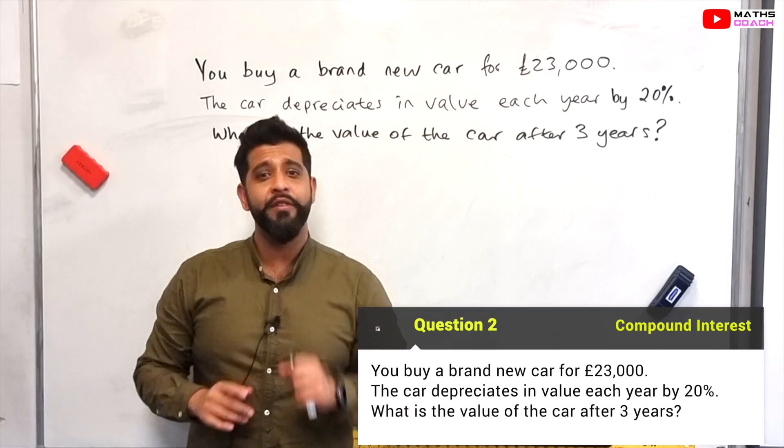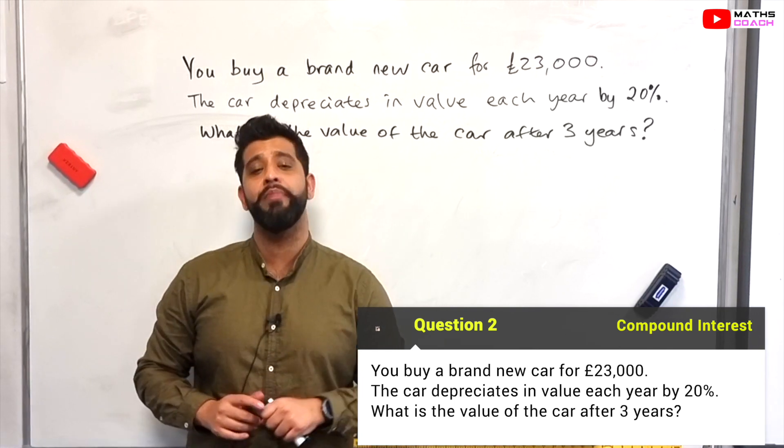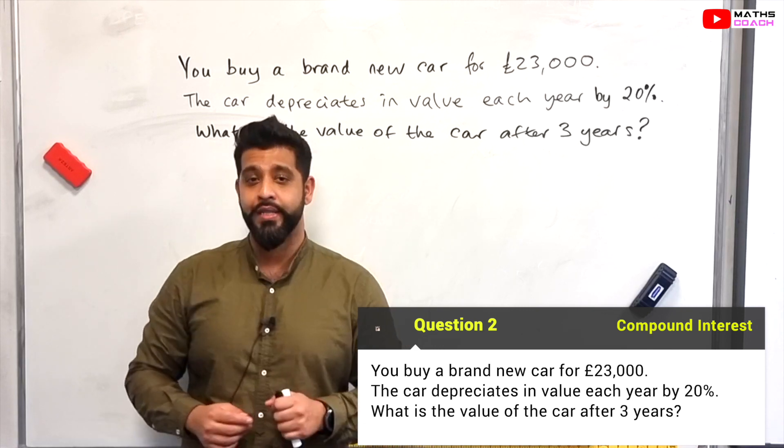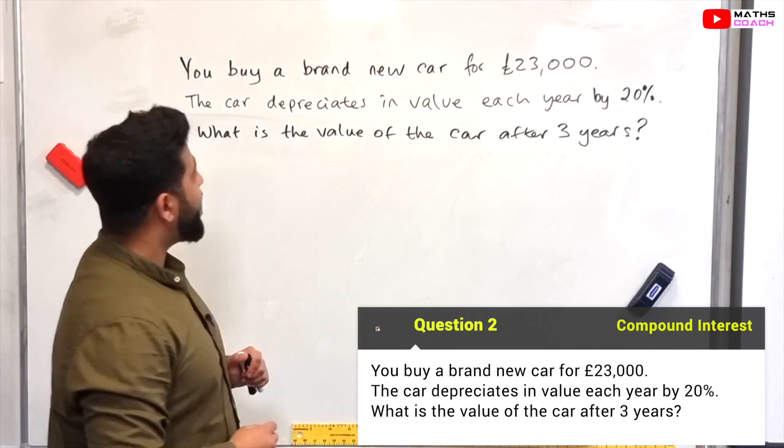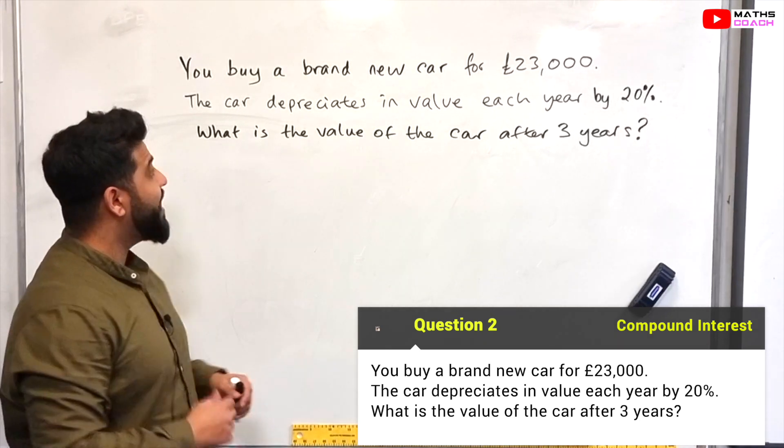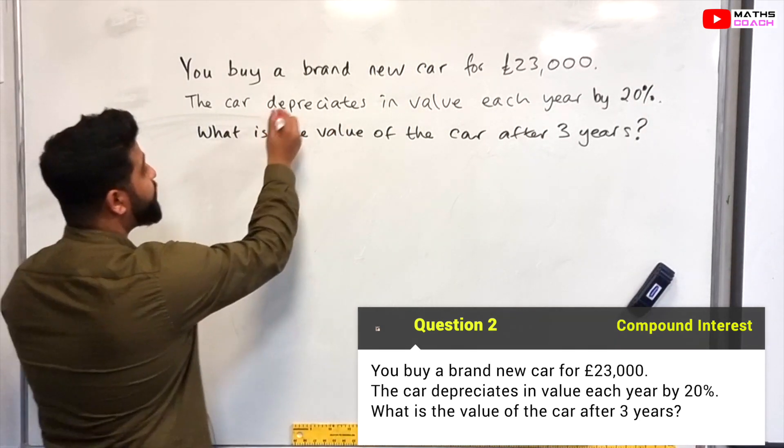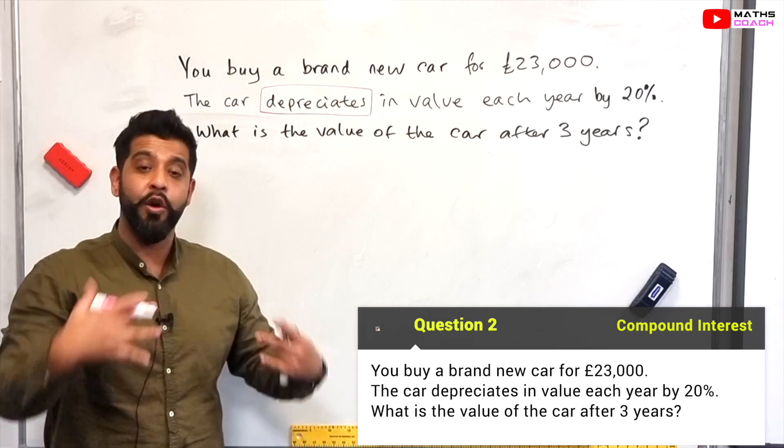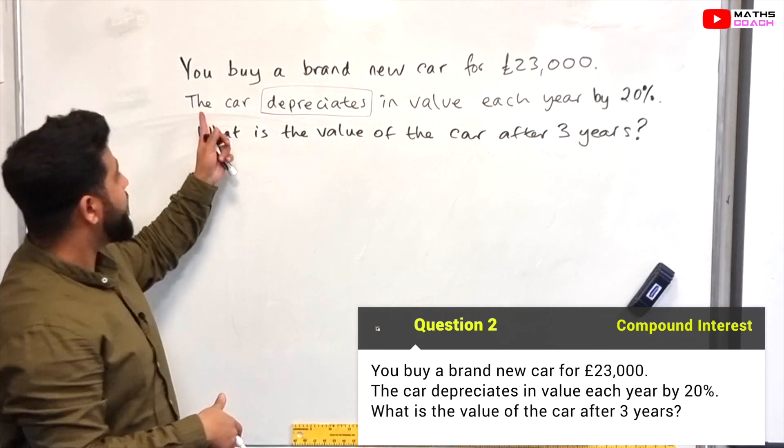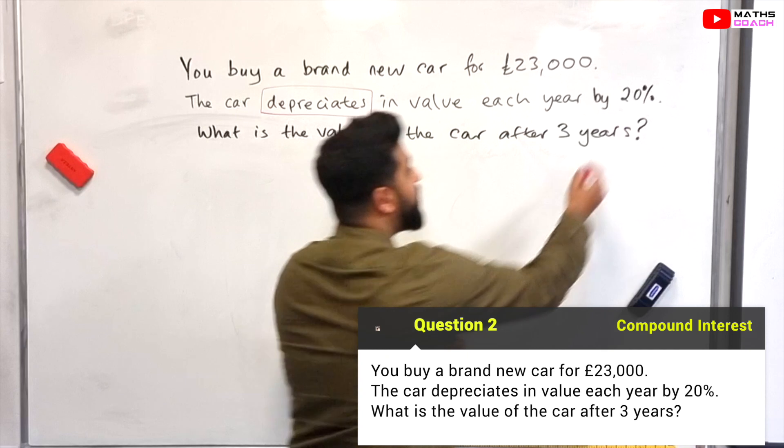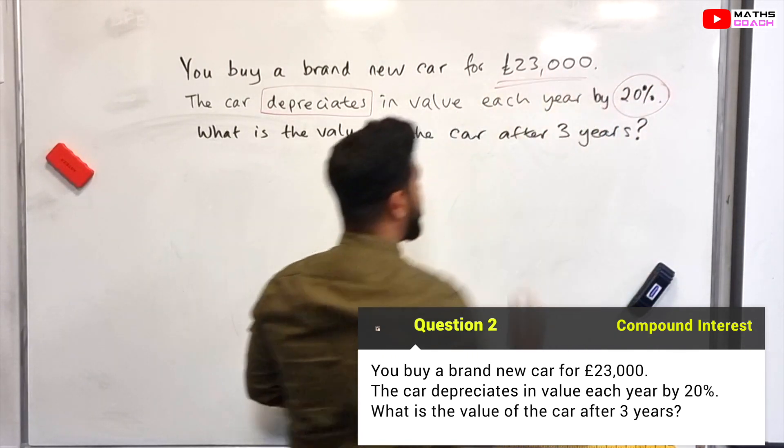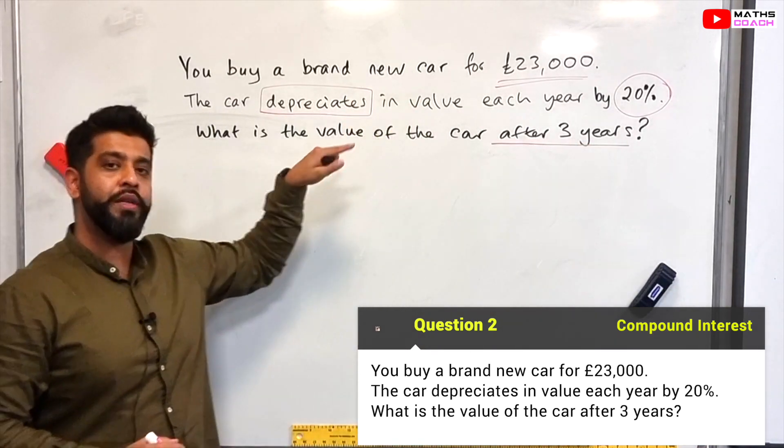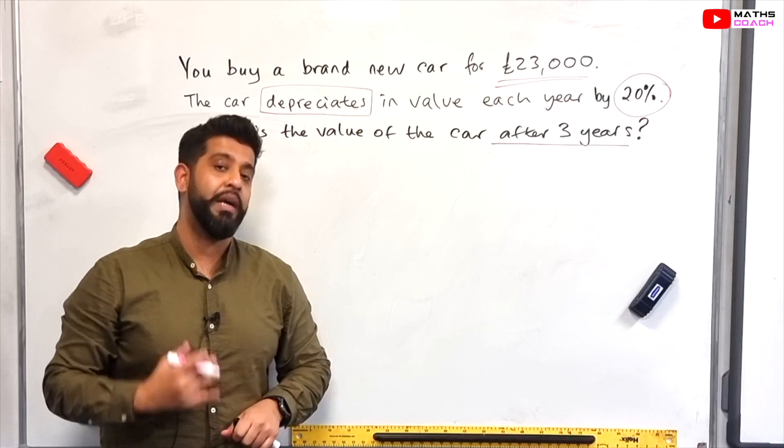Now this next question is going to be quite interesting for many of you because I'm sure a lot of you would be buying cars. And the price of cars depreciates as the years go by unless you've got those nice classic ones. So you buy a brand new car for £23,000 and the car depreciates. Now the meaning of the word depreciates is something that might be new to you. Depreciate simply means decreases, goes down in value. So the car depreciates in value each year by 20%. What is the value of the car after three years? So we've highlighted all the key points of this question.